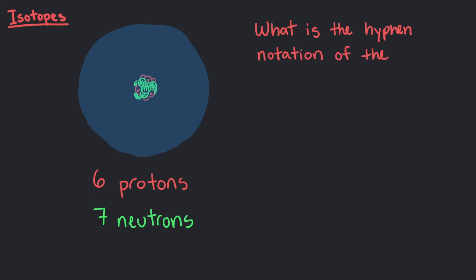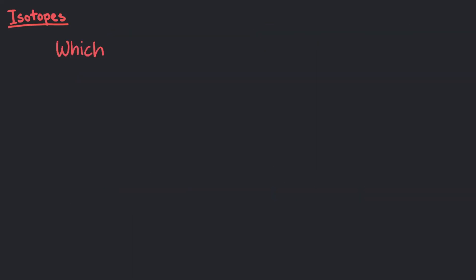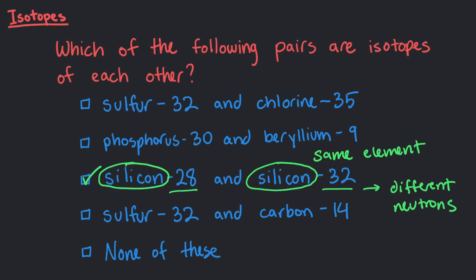What is the hyphen notation of the other carbon atom we discussed, the one with 6 protons and 7 neutrons? It's carbon 13 because the 6 protons plus the 7 neutrons give us a mass number of 13. Now that you know about isotopes and notation, which of the following pairs are isotopes of each other? Silicon 28 and silicon 32 are isotopes of each other. Isotopes have the same number of protons, which means they have to be the same element. Only the mass number differs due to the different number of neutrons.